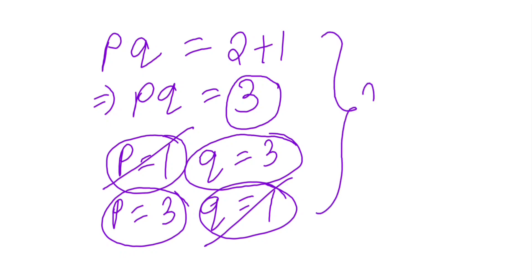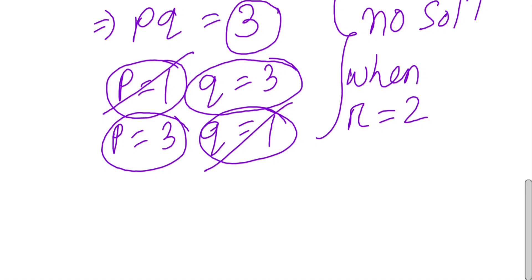So this gives no solution when r equals the even prime. It means r must be odd, so case 2.